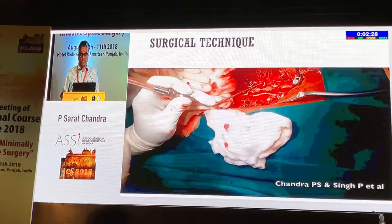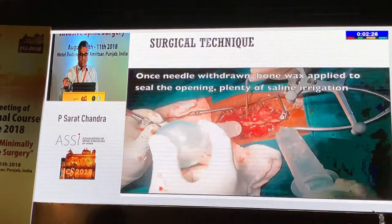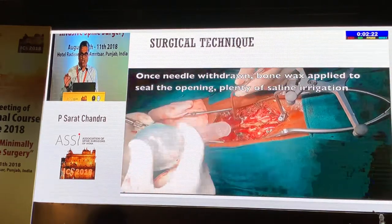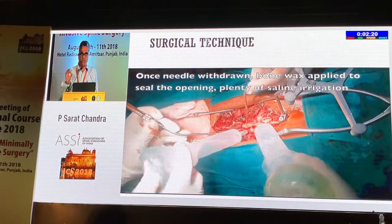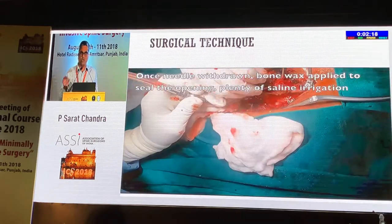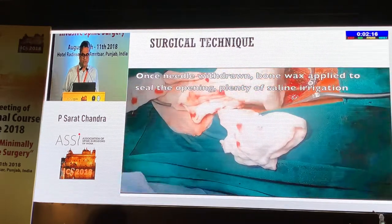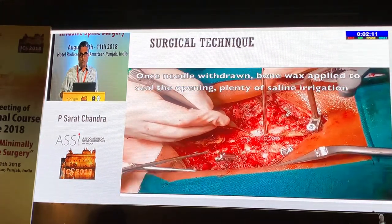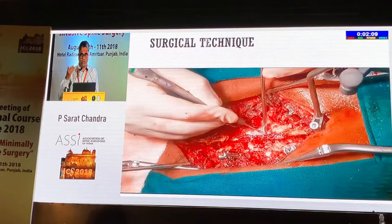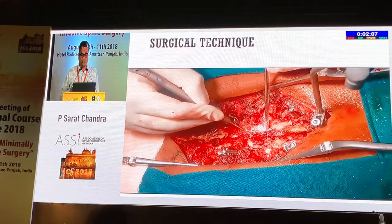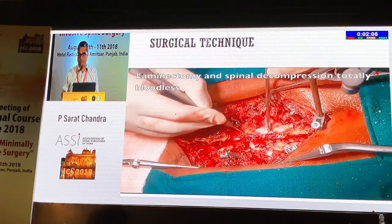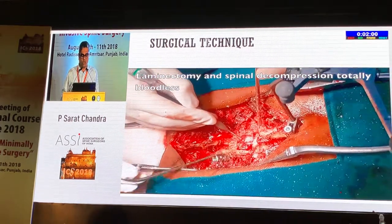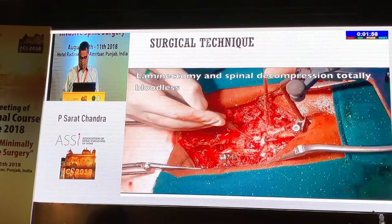Now you can proceed to do the laminectomy, and you find it becomes absolutely bloodless. Even if you have a ventrally placed hemangioma, you don't have to go and remove it — it will shrink over a period of time. Very importantly, when you withdraw the Jamshidi needle, you have to plug the opening with bone wax; otherwise there could be retrograde flow of the absolute alcohol, which could be very toxic for the muscles and the skin.